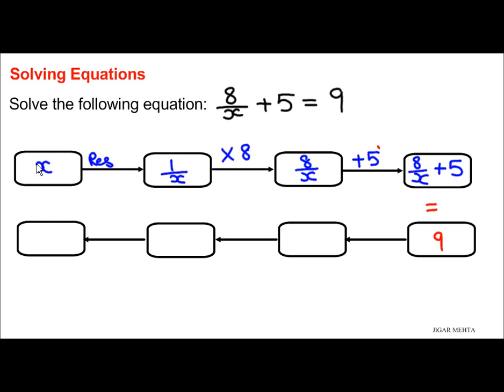Now the opposite of addition of 5 is subtraction of 5. So 9 subtract 5 you get 4. So what we have here is 8 over x equals 4.